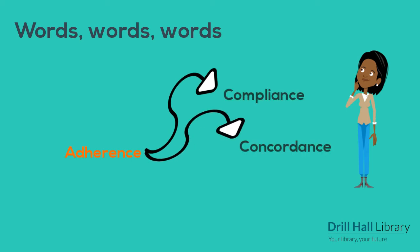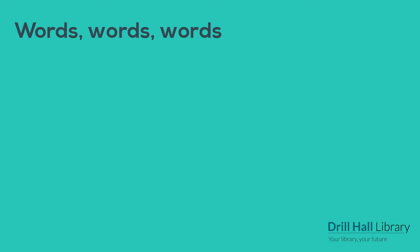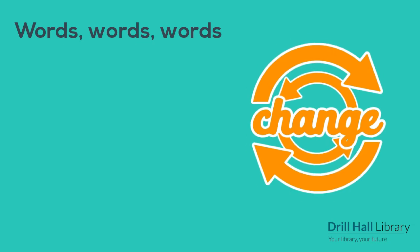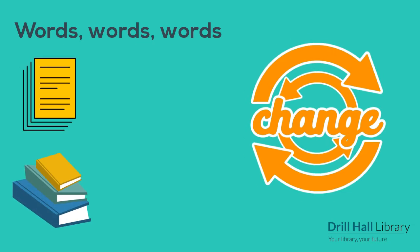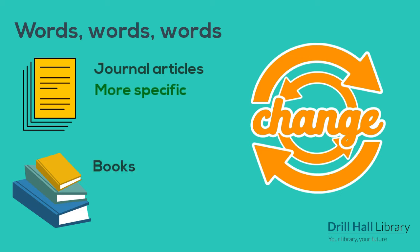You could also use the word concordance, though this has a different meaning, usually involving shared decision-making between prescribers and service users. You may need to adapt or change the words that you use according to the sort of information you're looking for. You need to be much more specific when you search for journal articles than you do with books, because journal articles are much more focused. And searching for a few different words for the same thing helps make sure that you find all the evidence you need.